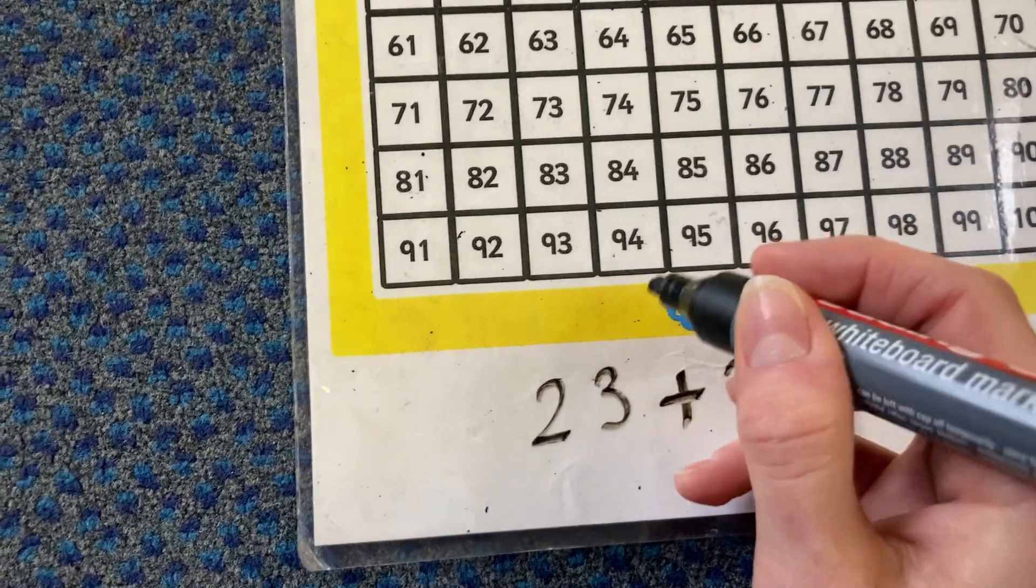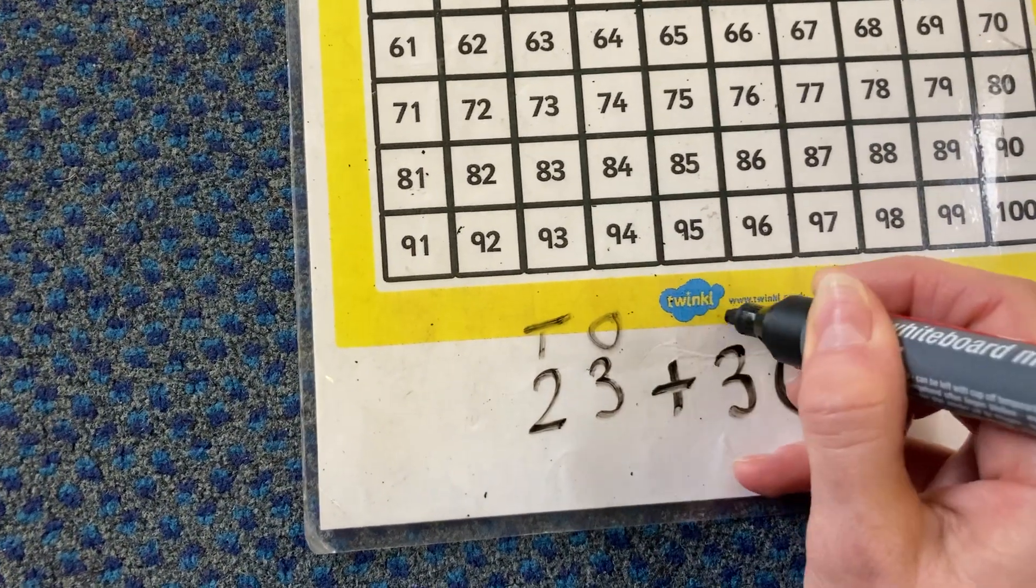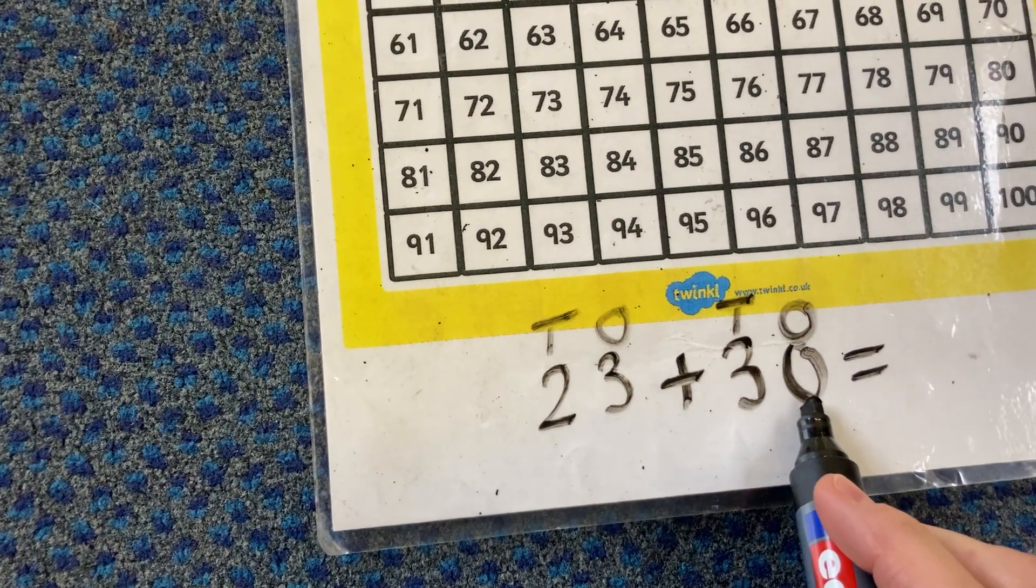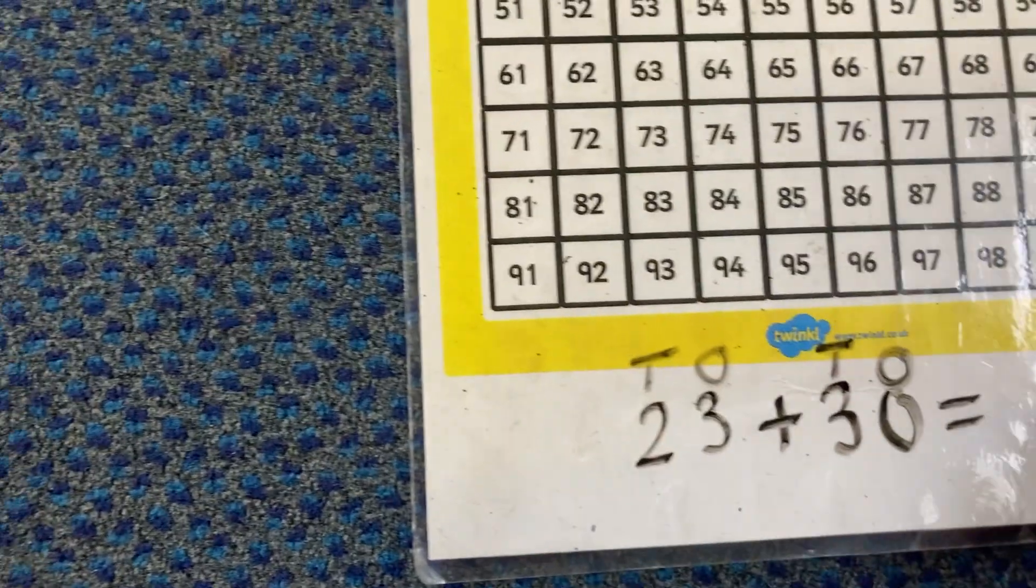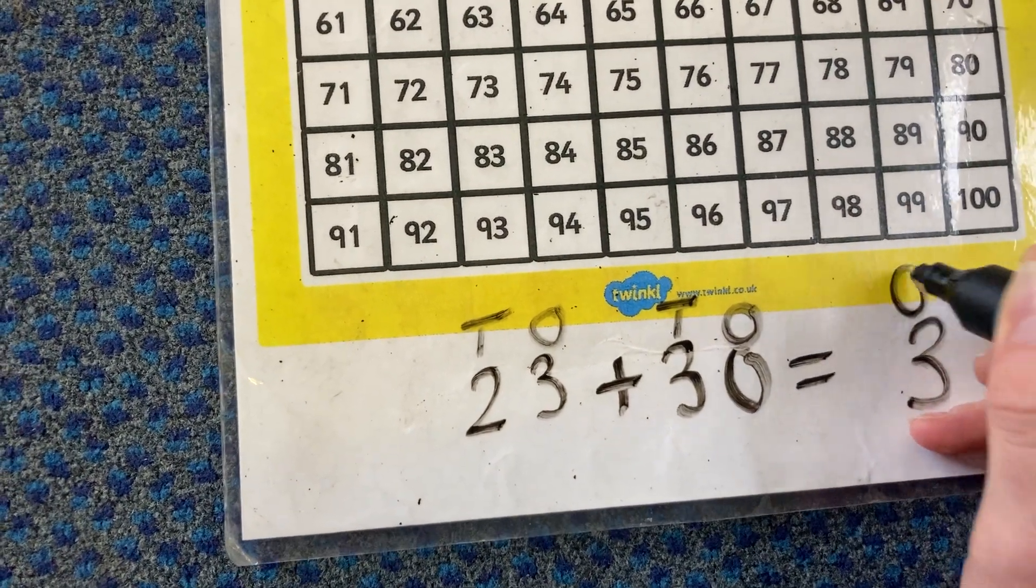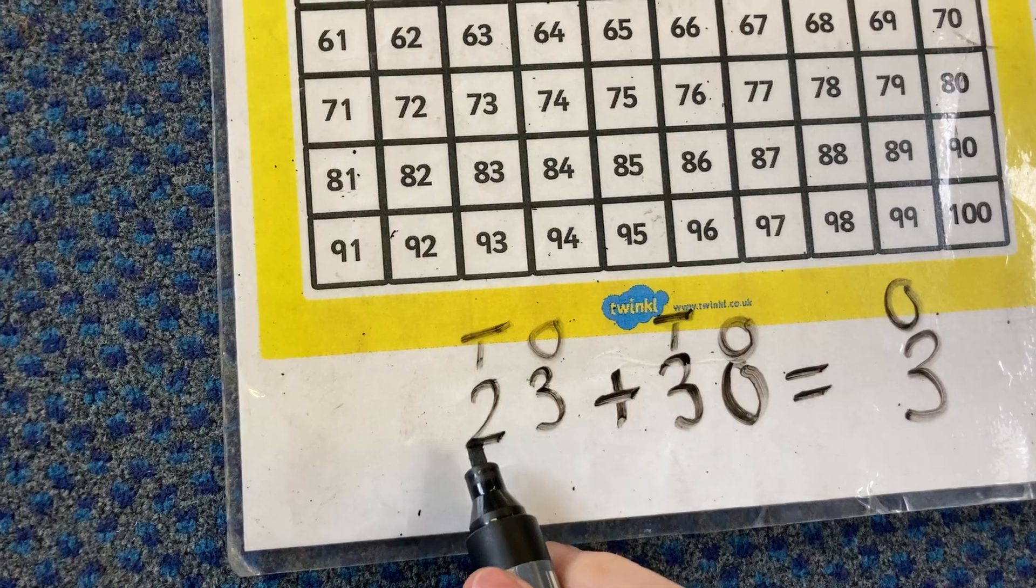If I put above there, tens, ones, tens, ones, you can see that I'm not adding anything to this number in the ones. So my answer is definitely going to have a 3 in the ones column, and it's just the tens that's changing.